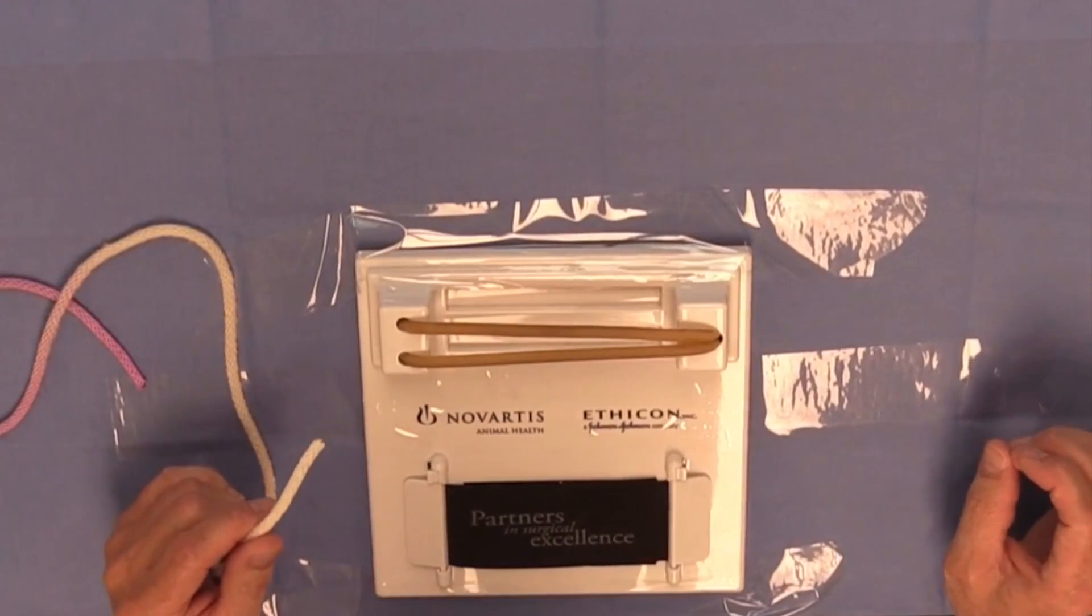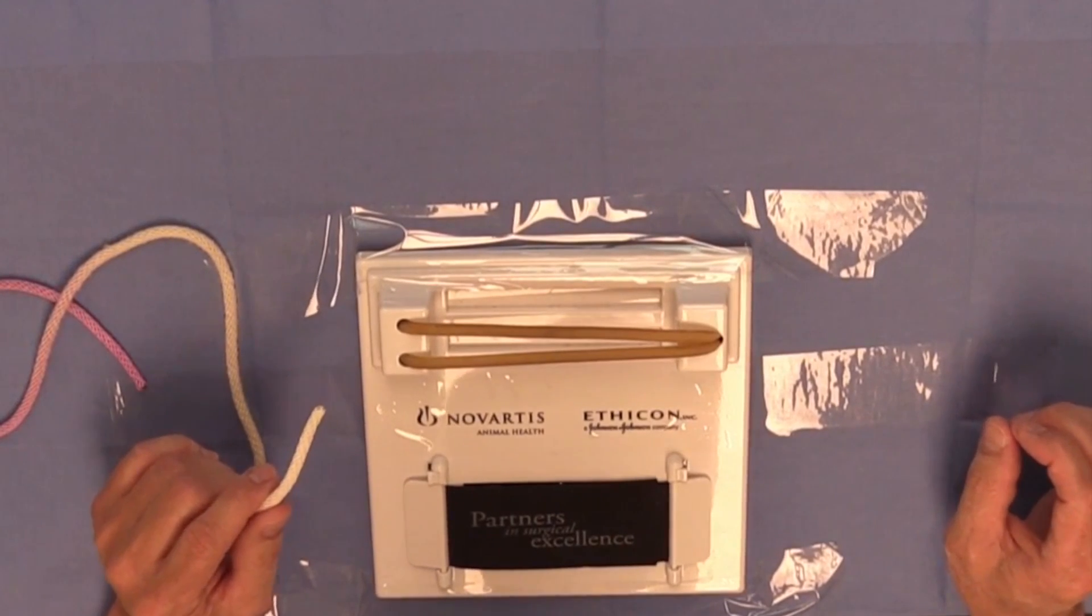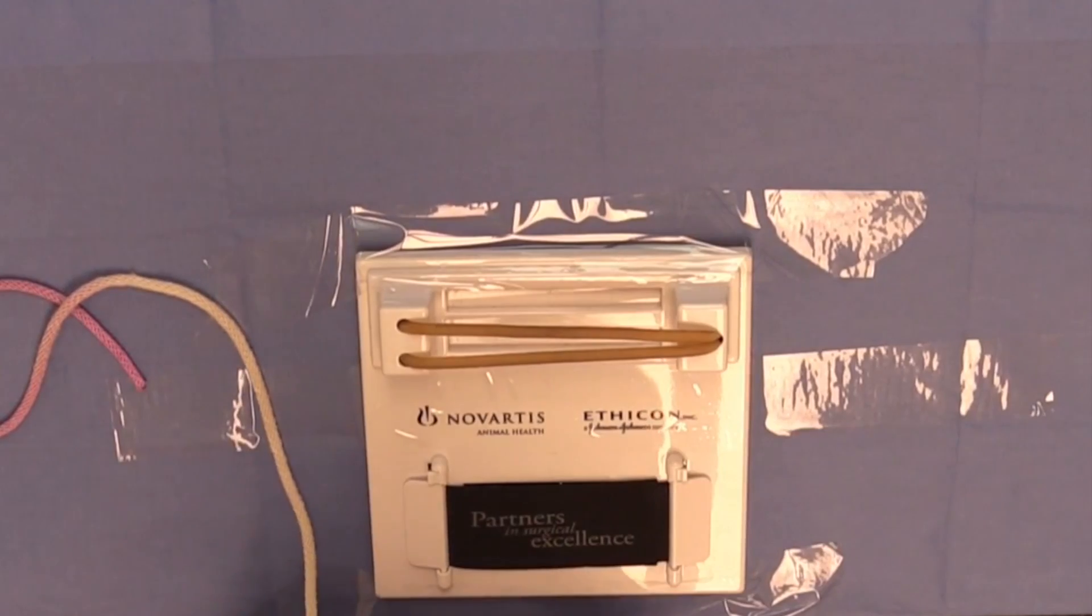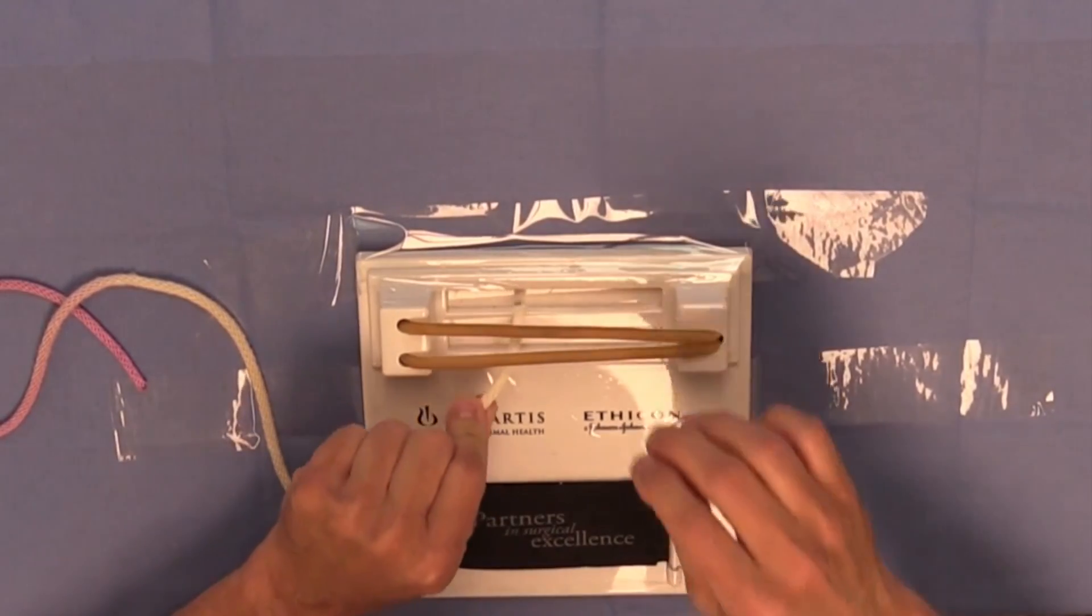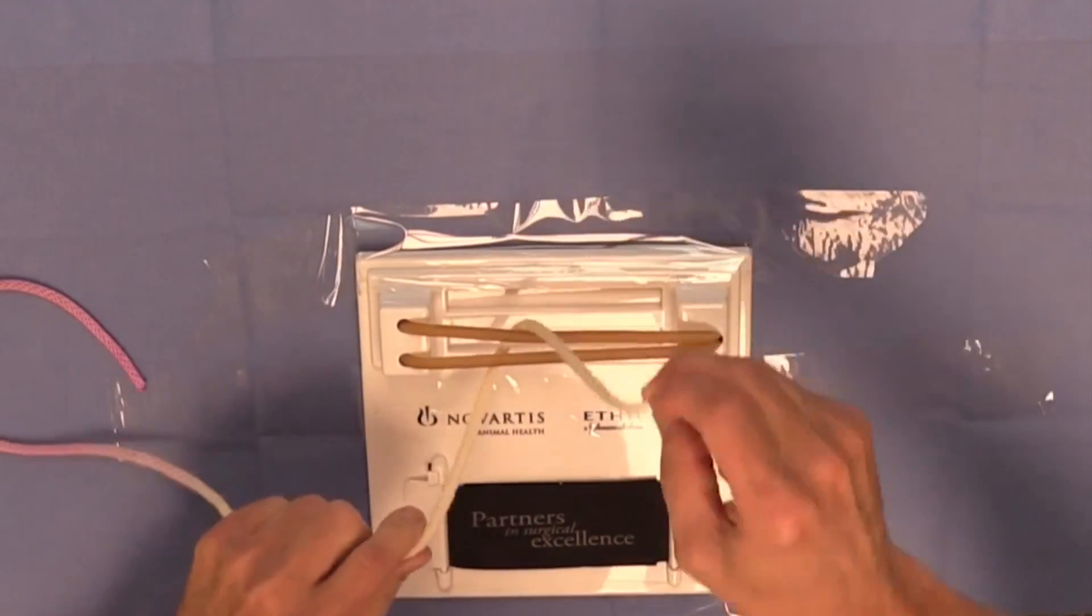There is a second way to construct a surgeon's knot using a one-hand technique that might be a bit simpler than the previous one that I demonstrated. This time, I'm going to feed the suture material around the tubing underneath and around and toward me, such as this.